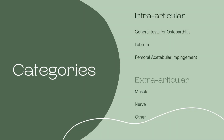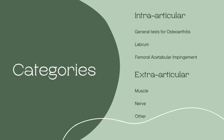You can break it up into different categories. We're going to look at intraarticular — meaning inside the joint — so you're going to be looking at osteoarthritis, labrum, and impingement. And then we're going to look at extraarticular tests, which looks at things outside the joint, such as muscle, nerve, and then some other special tests of the hip.